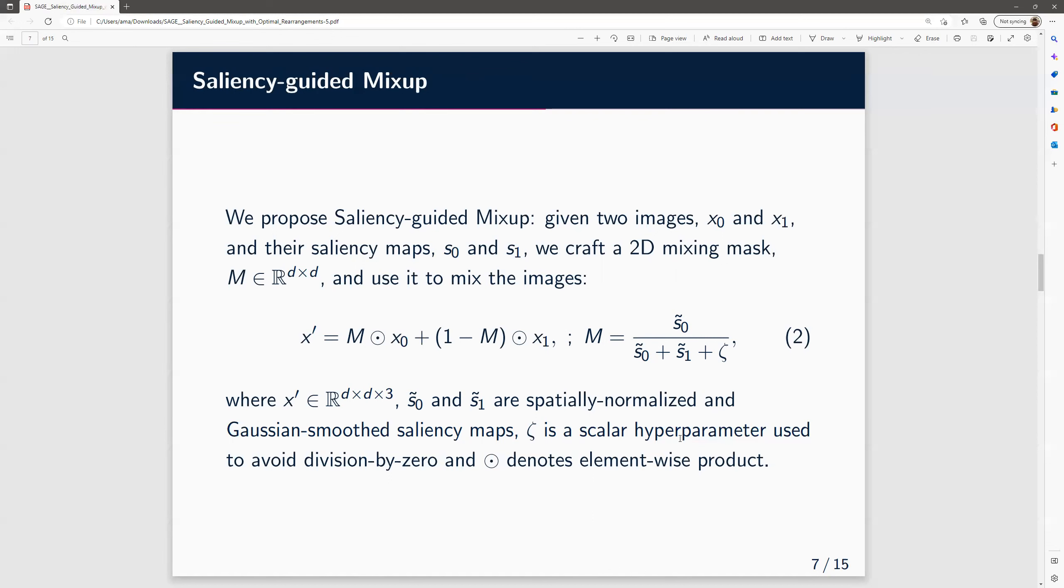Zeta is the scalar hyperparameter used to avoid division by zero. x-prime is the blending result, the new image, by mixing x_0 with M and x_1 with 1 minus M. And this denotes the element-wise product.